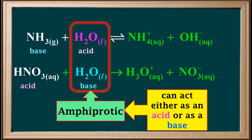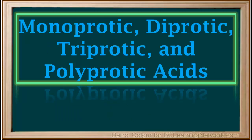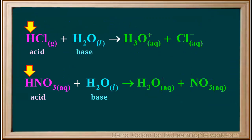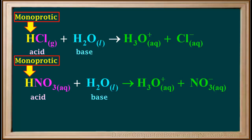Monoprotic, diprotic, triprotic, and polyprotic acids. Consider HCl and HNO3 — both are able to lose one proton only. An acid that has one proton available to donate is called a monoprotic acid. So both HCl and HNO3 are monoprotic acids.